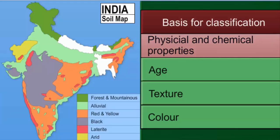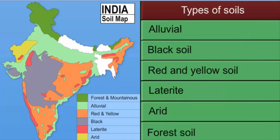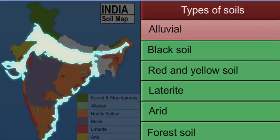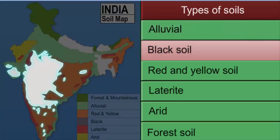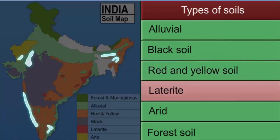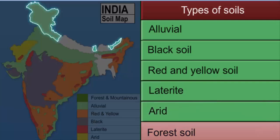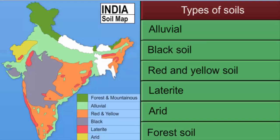Based on their physical and chemical properties, age, texture, and color, soils in India can be classified as alluvial, black soil, red and yellow soil, laterite, arid, and forest soil. Let us learn more about each of these types of soils.